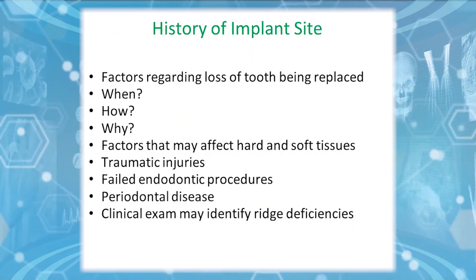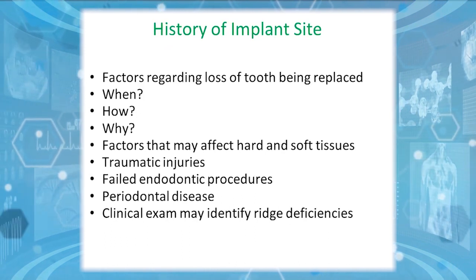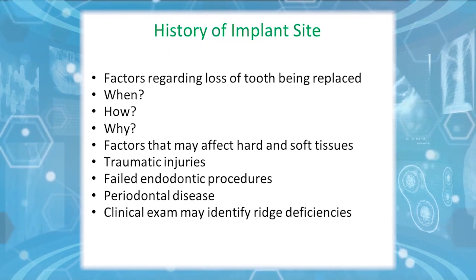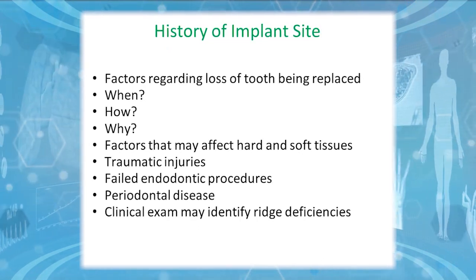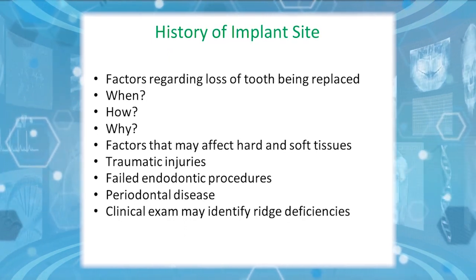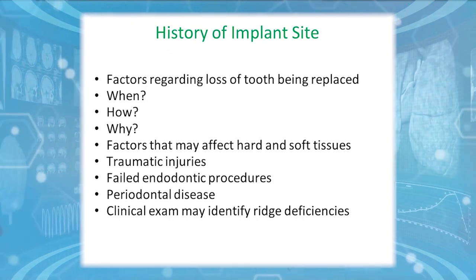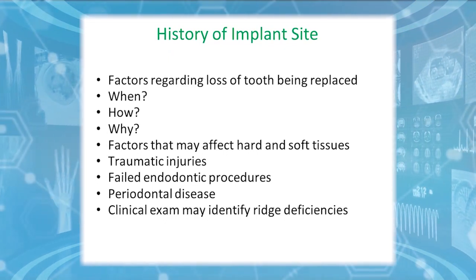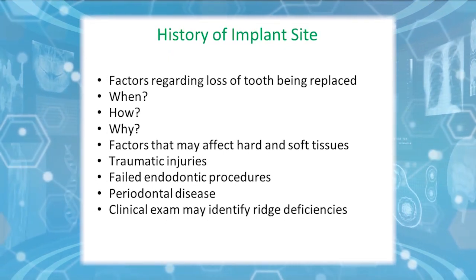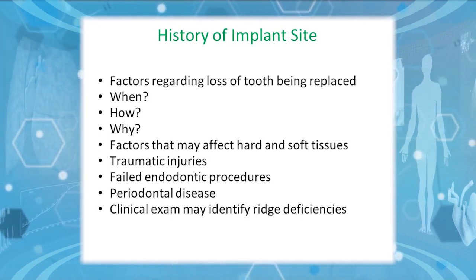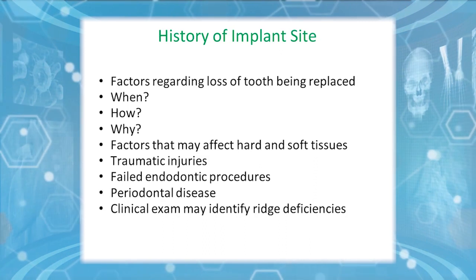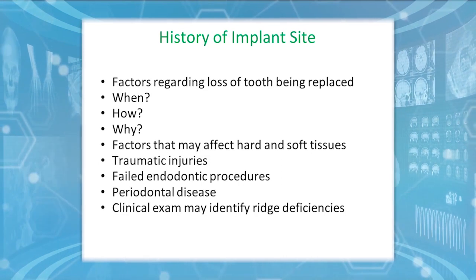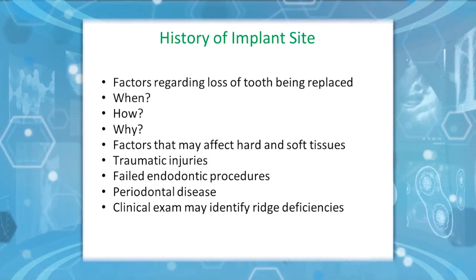The history of the implant site is also important. Factors regarding the loss of the tooth being replaced must be considered: when the tooth was lost, how it was lost, and why. Factors affecting hard and soft tissues include traumatic injuries, failed root canal treatment, and periodontal disease — diseases affecting the gum and bone. We also need to identify ridge deficiencies, whether horizontal or vertical bone loss.